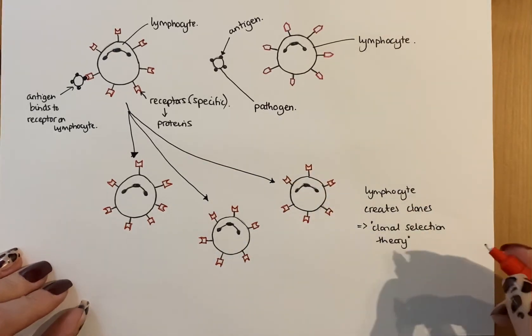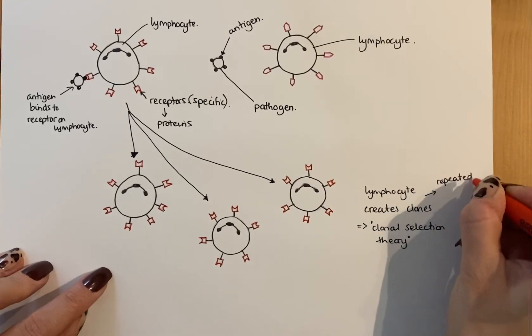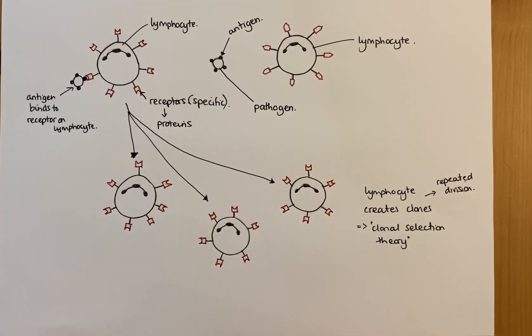So it repeatedly divides to produce those clones. Now this is really important to remember because this happens no matter what type of lymphocyte it is. And everyone always tends to forget that no matter what type of lymphocyte it is, whether it's B or T, this will always happen first. So the lymphocytes will always bind to the foreign antigen on a pathogen and it will always form clones. That's the key message to take from that. I'm going to move on now and I'm going to do the next video on T lymphocytes.